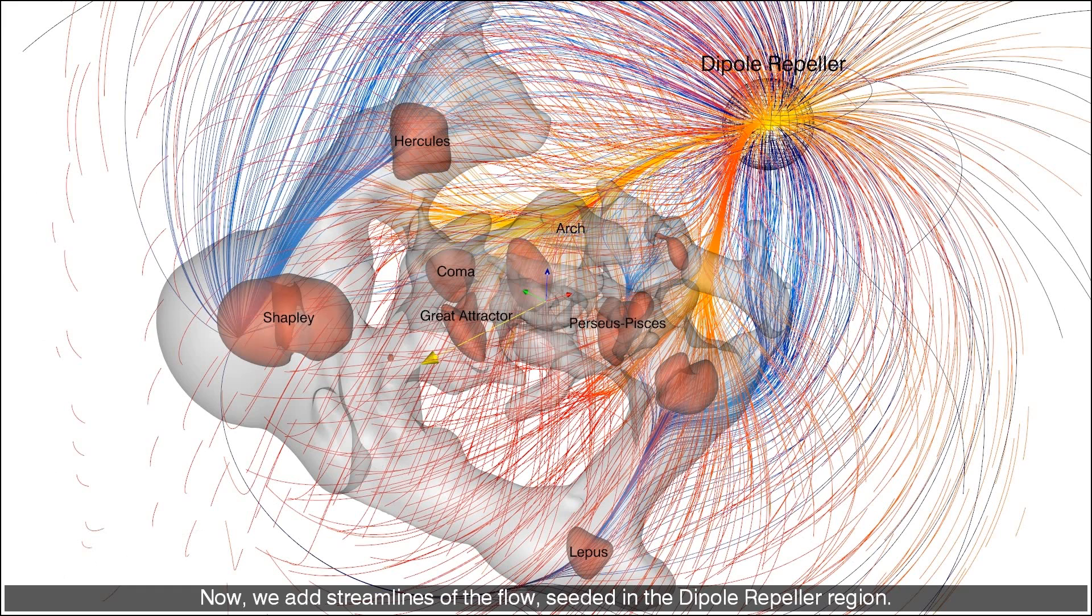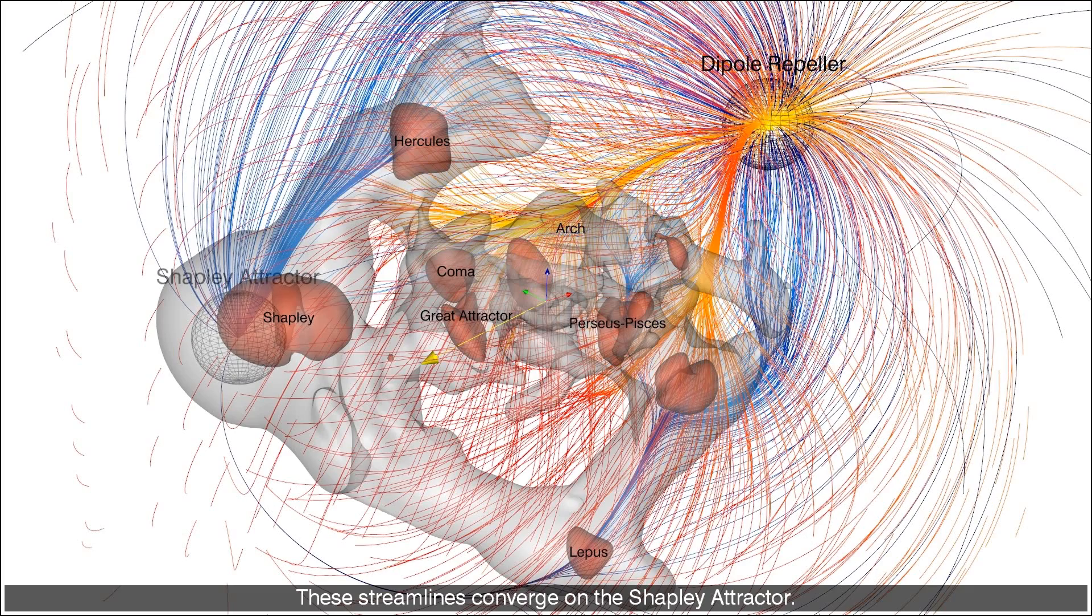Now we add streamlines of the flow seeded in the dipole repeller region. These streamlines converge on the Shapley attractor.